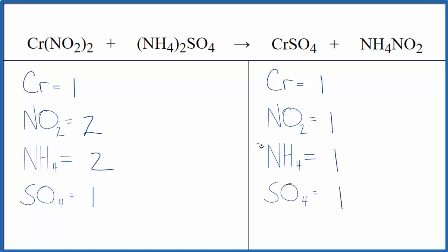I can see right away that I need to get two nitrite ions over here and two ammonium ions. And all I have to do is put a two here, two times the ammonium, that gives me two of those, two times the nitrite, that gives me two of those.